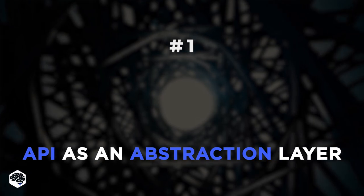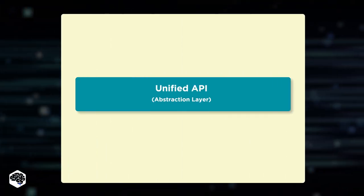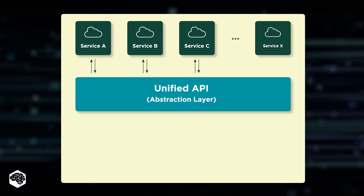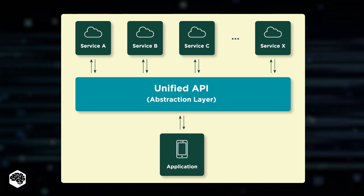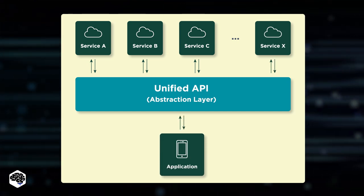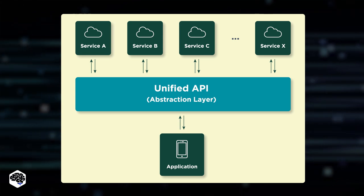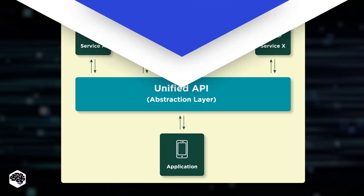Firstly, you can use an API as an abstraction layer. Much like an abstraction layer, API often creates a more manageable format, even protecting information. API enables the backend facility to create an abstraction layer.